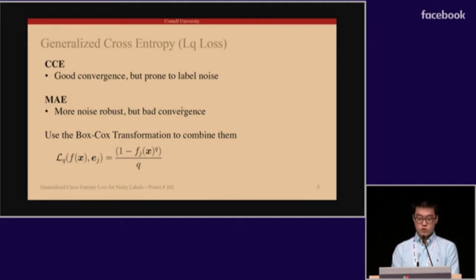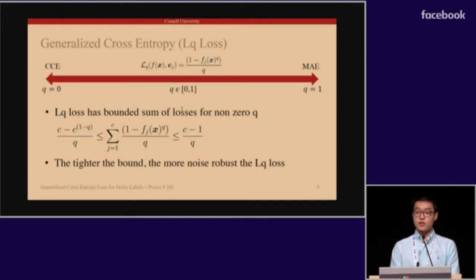In this work, we propose to use the negative of Box-Cox transformation as a loss function. What results is a set of loss functions with a parameter q. When q is set to be 1, it is equivalent to mean absolute error with probabilistic output, and at the limit of q equal to 0, it is equivalent to cross-entropy loss.